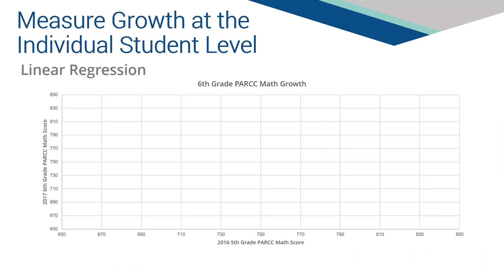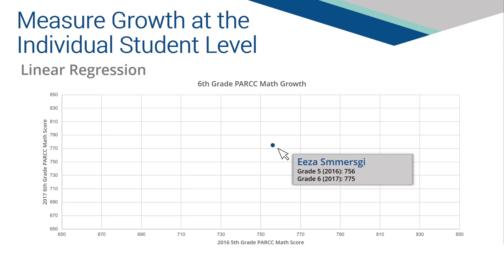The ISBE document states that current scores are regressed on last year's scores to compute student academic growth. Linear regression starts by plotting a student's score this year — in this example, a grade 6 PARCC math score in 2017, that's the y-axis — versus his or her last year's score, which in this example is a grade 5 PARCC math score in 2016 for the same student, that's the x-axis.